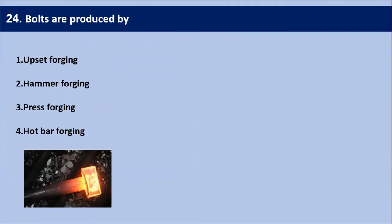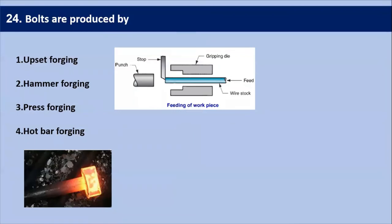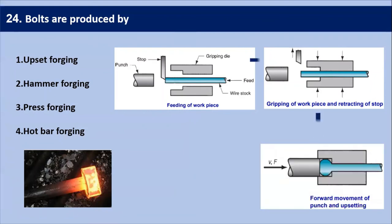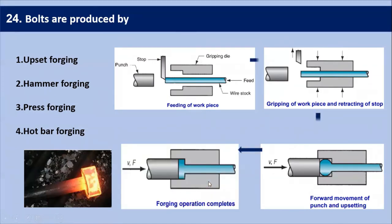Bolts are produced by? Bolts are produced by upset forging. We grip the work piece between the gripping dies, hold it, and then give a forward movement with the help of a punch. At the end, we get the required shape — a bolt head is generated. So the forging operation is complete, and the bolts are produced with the help of upset forging.